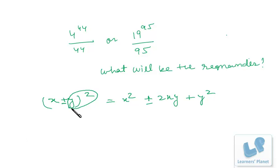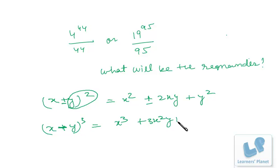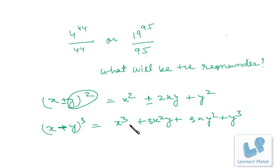Similarly, if we divide the entire expression by y, then x squared will be the remainder. If we expand the same rule for (x + y) whole cube, we get x cubed plus 3x squared y plus 3xy squared plus y cubed. In the binomial expansion, each and every term is a multiple of both x and y except x cubed and y cubed.